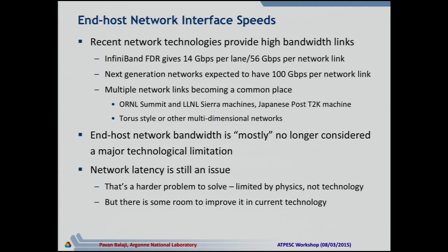Today we're at about 50 to 60 gigabit per second per network link. The next generation is expected to have about 100 gigabit per second per link, and it's easy to add parallelism with multiple network links. You could build a node driving 500 or 600 gigabit per second using five or six links. Multiple network links are already commonplace — Oak Ridge, Livermore, and Japan's post-K machine all have at least two outgoing and incoming links per network node.